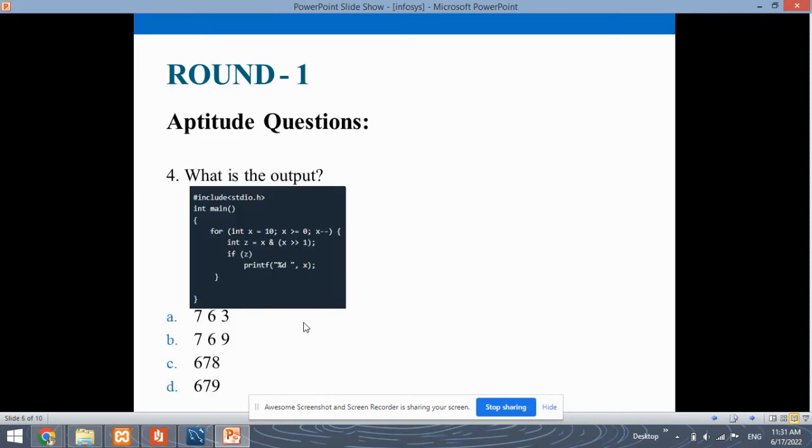Next you have the pseudocode question. In pseudocode types of questions, you will be given a code in any programming language. You need to find out the output of that code. Without any compilation, you have to perform the code and you need to find out the output. This is the code and four options are given. You need to analyze this question or this code and find the solution to the output.